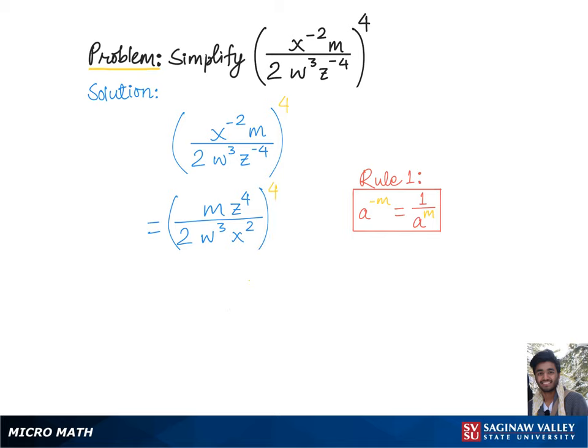which can further be simplified using rule 2, according to which we'll simply multiply the exponents. That is, m to the 1st power times 4, multiplied by g to the 4 times 4, over 2 to the 1st power times 4, multiplied by w to the 3 times 4, multiplied by x to the 2 times 4,